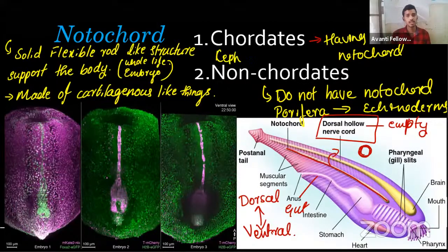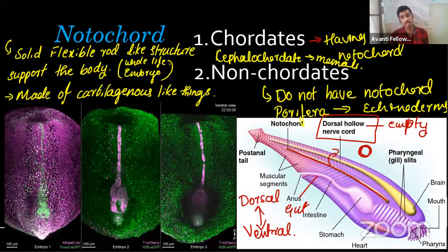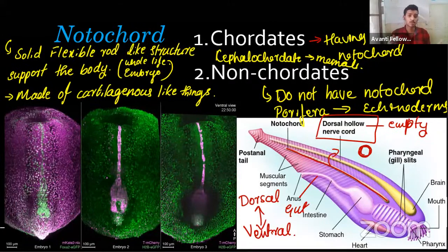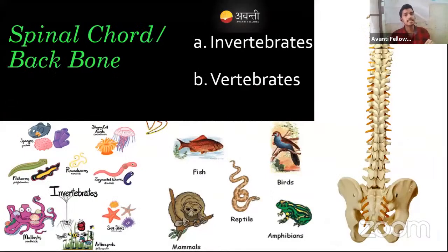For chordate examples, we can go from cephalochordates all the way to mammals — all of them are chordates. Chordates are then divided into two types based on presence or absence of the spinal cord: non-vertebrates (or invertebrates) and vertebrates.